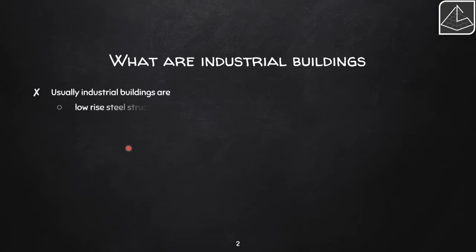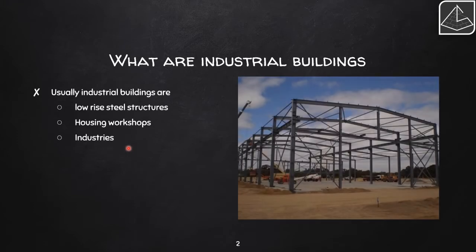Industrial buildings are low-rise steel structures that house workshops or industries. This is a typical picture of an industrial shed — you can see all the components are steel members: the columns, the beams, and even the bracings and supports are all steel.